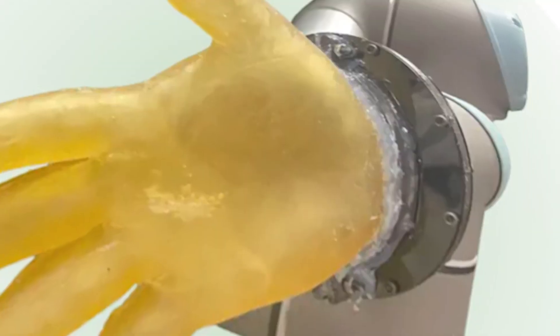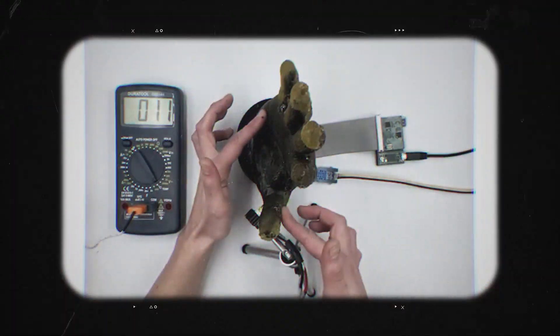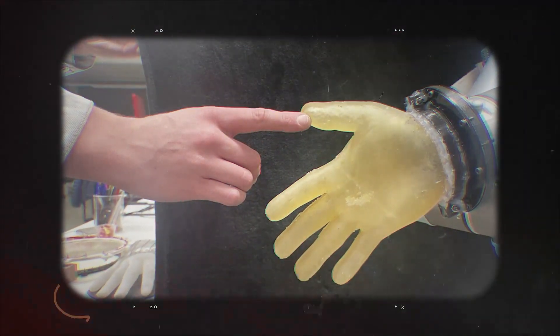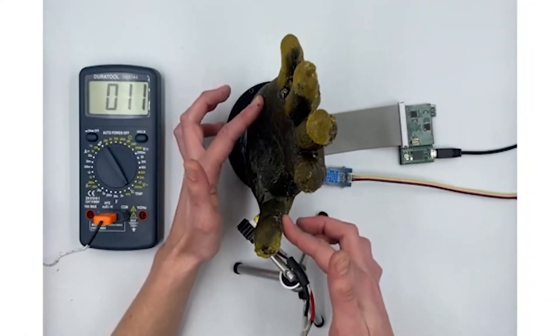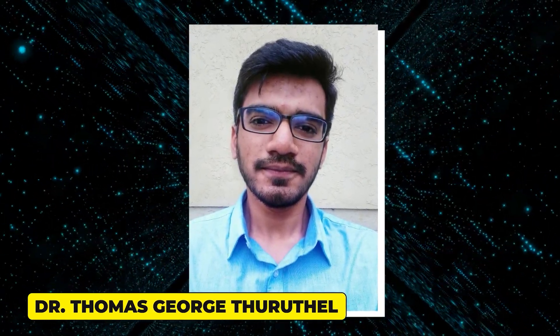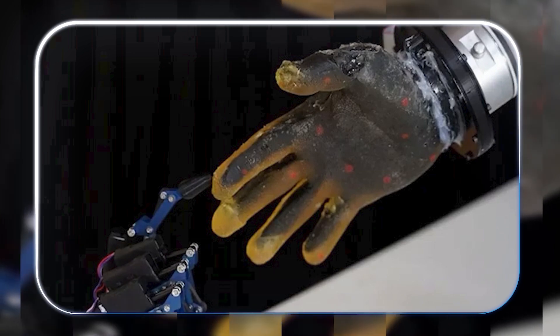The implications are staggering. Picture prosthetic limbs that actually let users feel textures, or surgical robots that can gauge tissue pressure in real time. Even wearables could leap forward, evolving from simple trackers to devices that respond to your touch like a second skin. The team already demonstrated a robotic hand wrapped in this hydrogel, proving it can track objects, sense contact, and react to temperature changes. We're not at human skin levels yet, admits Dr. Thomas George Thurothel, a co-author, but we're closer than anyone else. The real kicker? This skin could train AI systems to interpret human-like touch, paving the way for robots that interact with us, and the world, in ways that feel eerily natural.